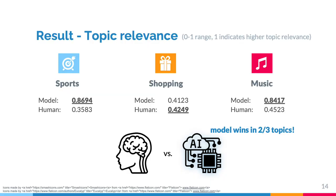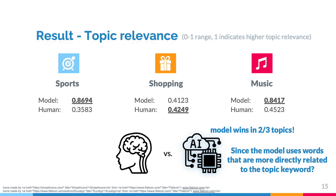This is the result evaluated in terms of topic relevance. The range of the numbers is from 0 to 1, and 1 indicates higher topic relevance. As you can see from the numbers, the model-generated testing input has higher topic relevance in the sports and music domains, and the human-generated testing input has higher topic relevance in the shopping domain, though even there the gap is very small. We believe the topic relevance is higher in the model-generated testing input because the model is more likely to choose words that are more directly related to the topic keyword.